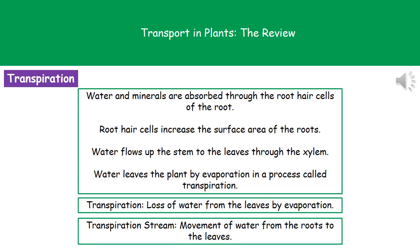Thinking about our plant, water and minerals are going to be absorbed through those root hair cells in the root. The reason we use root hair cells is to increase the surface area of the roots so that this can happen faster. Once the water is inside the plant, it flows up the stem to the leaves through our xylem, and then the water leaves the plant by evaporation in the process of transpiration.